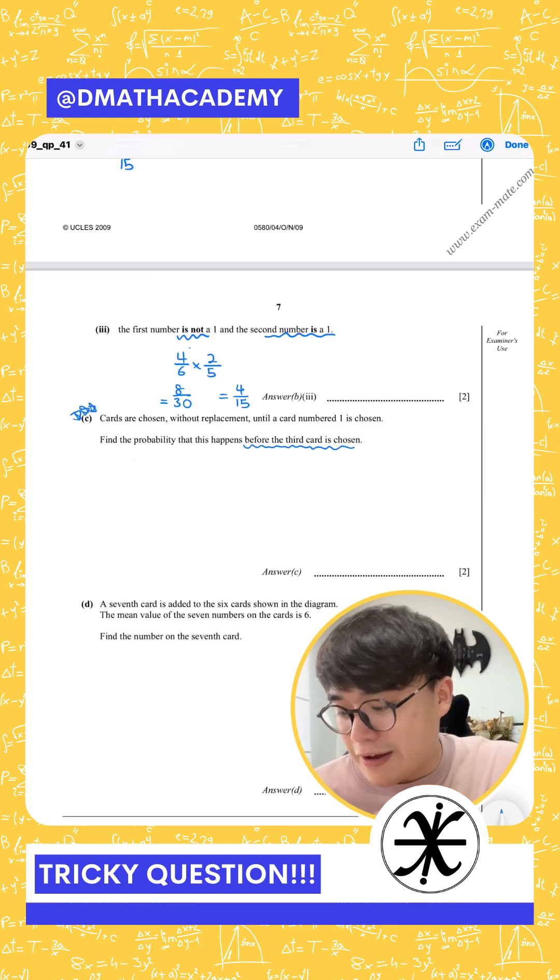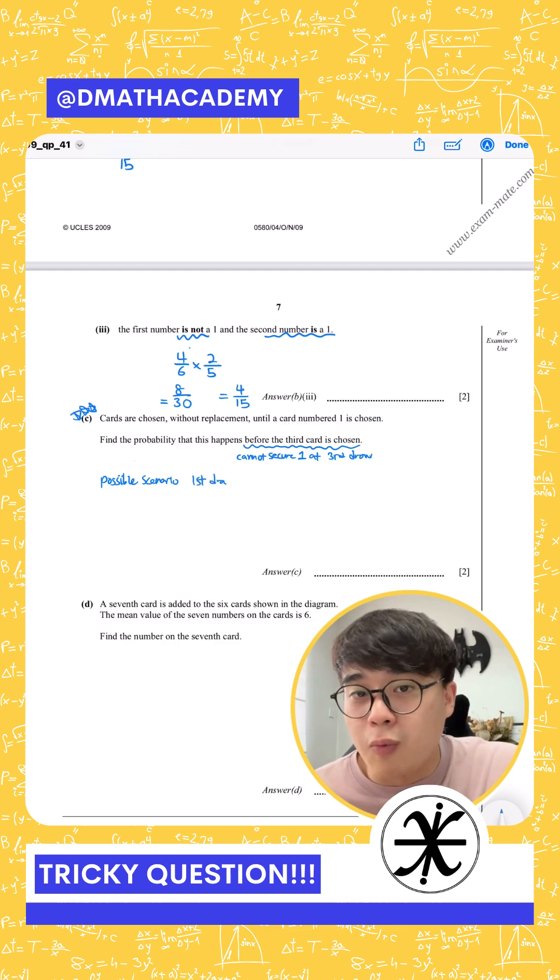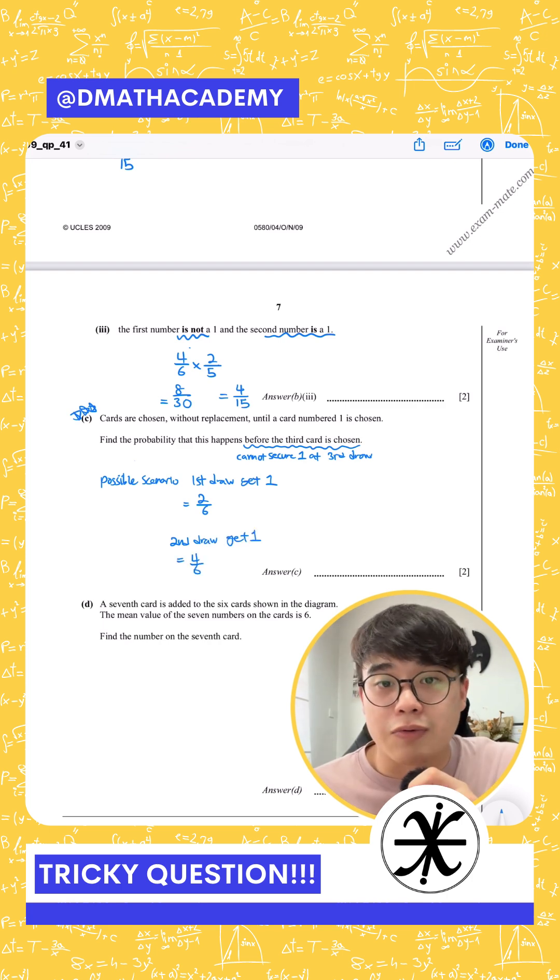Question C, however, is my favorite question because they are testing you about drawing 1 before the third card is chosen. So you need to know that you can draw 1 at the first time or the second draw, which means you have to list down all the probabilities and add them up, and you will get 18 over 30 as your final answer.